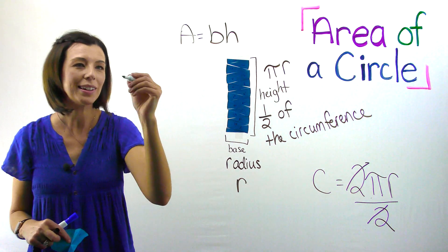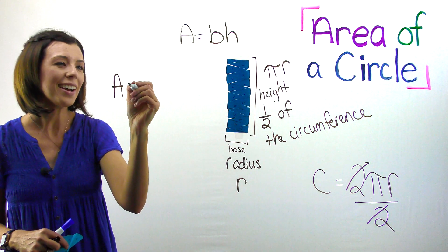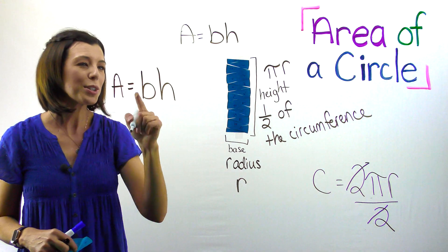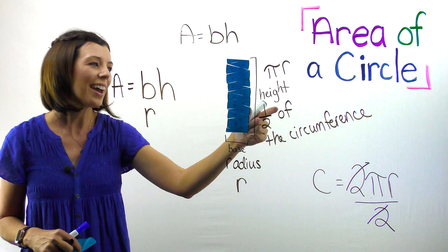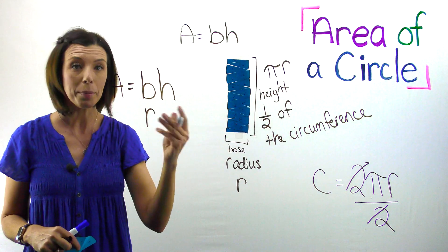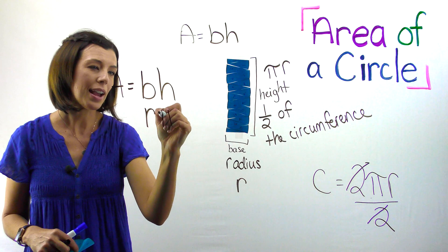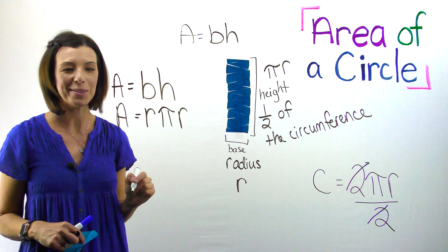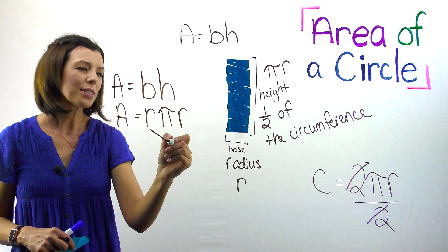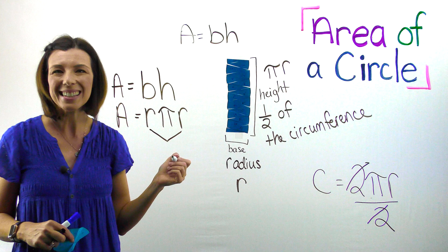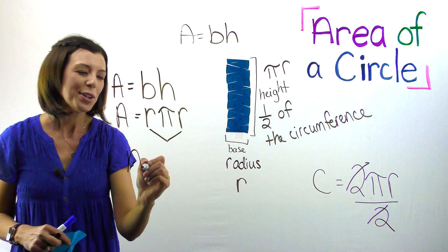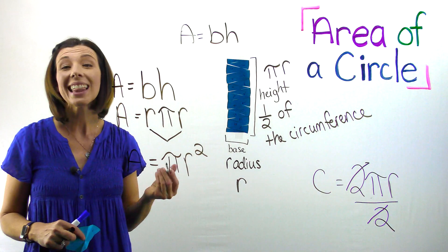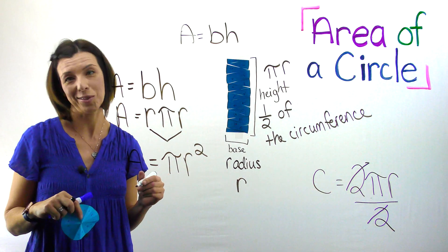Let's plug this in our formula. So now I know that the area equals base times height. The base is the radius, and the height is πr because it's half of the circumference. So the area equals the radius times pi times the radius. What is radius times radius? Think of what's x times x, x squared. So the area equals pi times the radius squared. This is how we get the area of a circle.